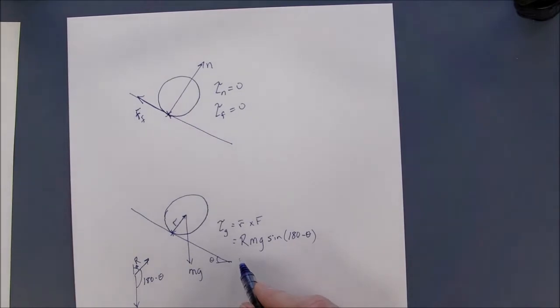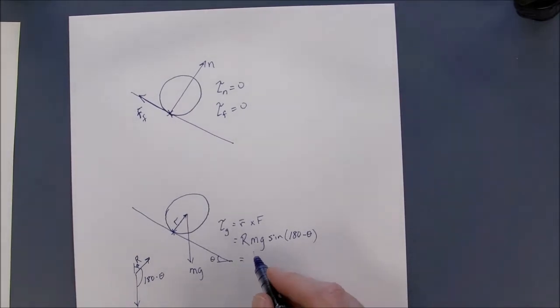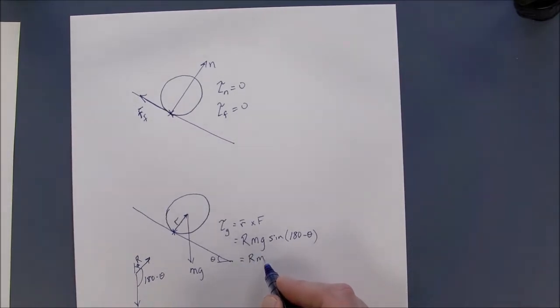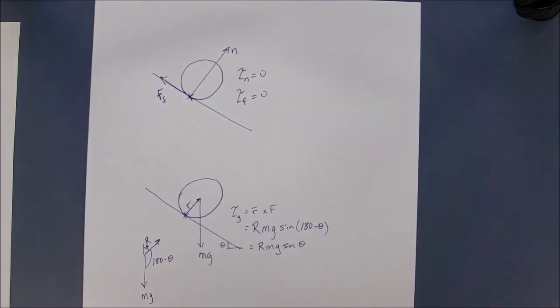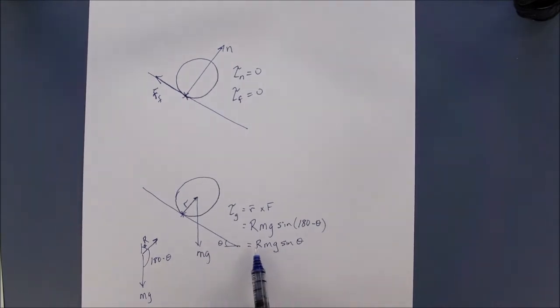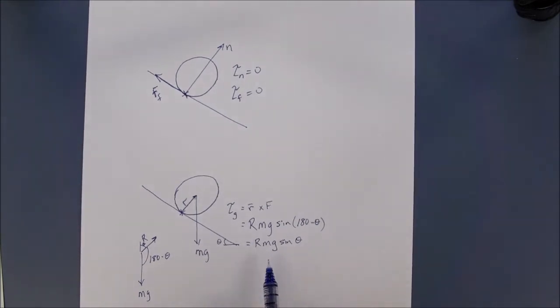Of course, 180 minus theta, the sine of 180 minus theta rather, is simply the sine of theta. And so that is the torque due to gravity.